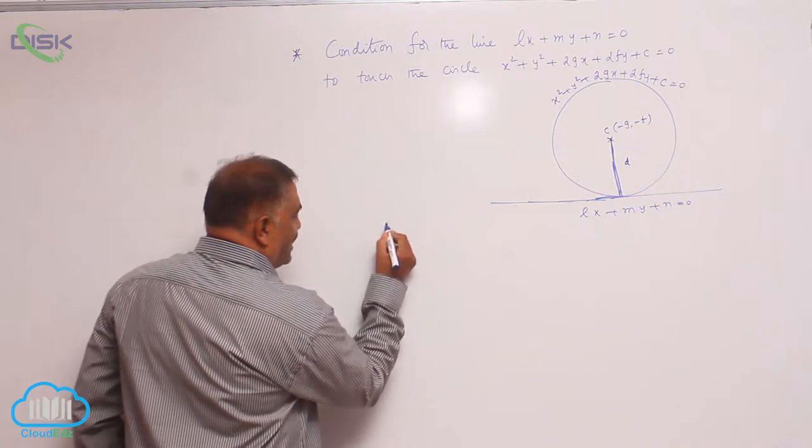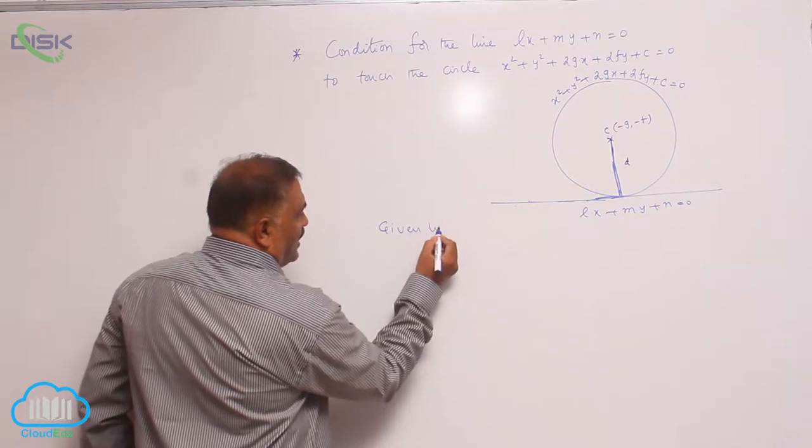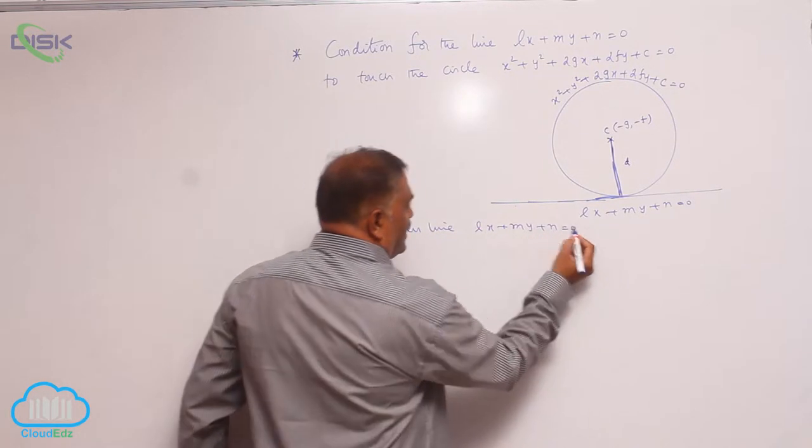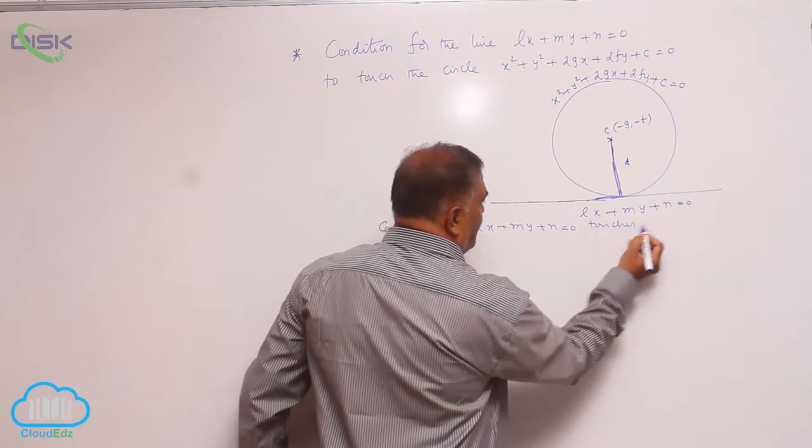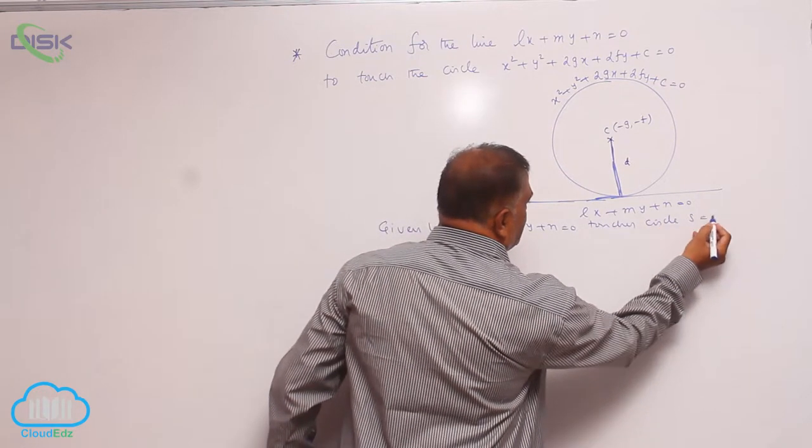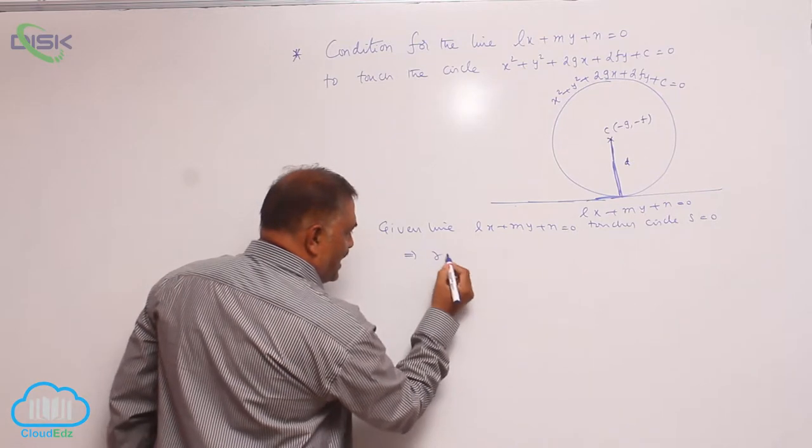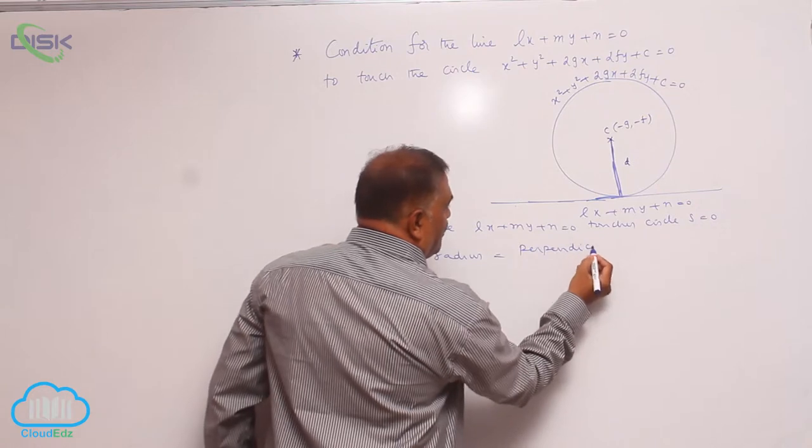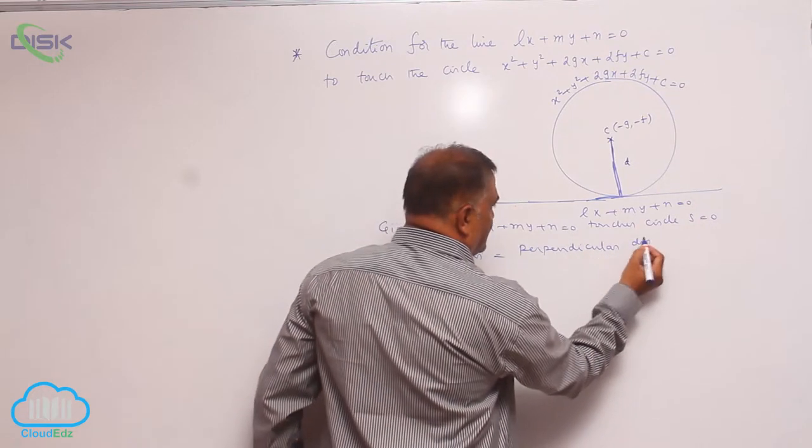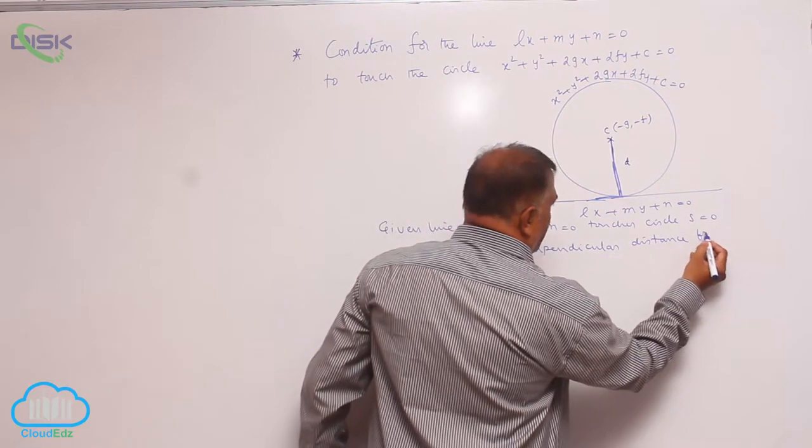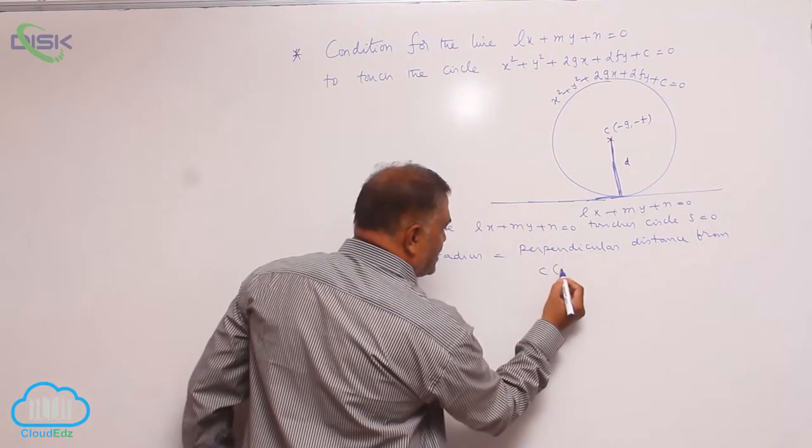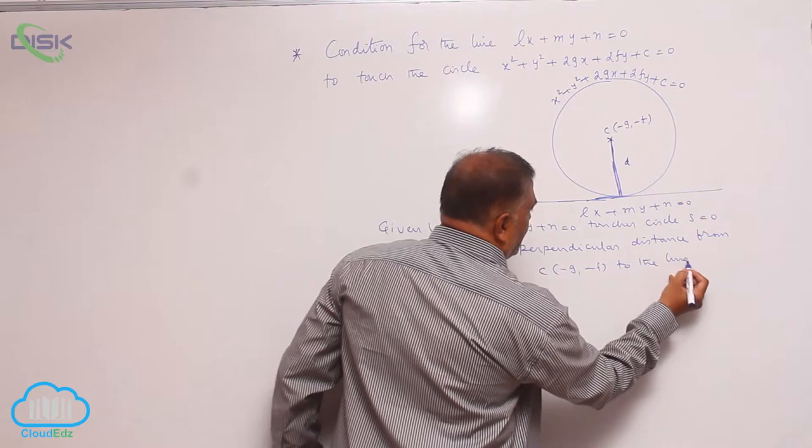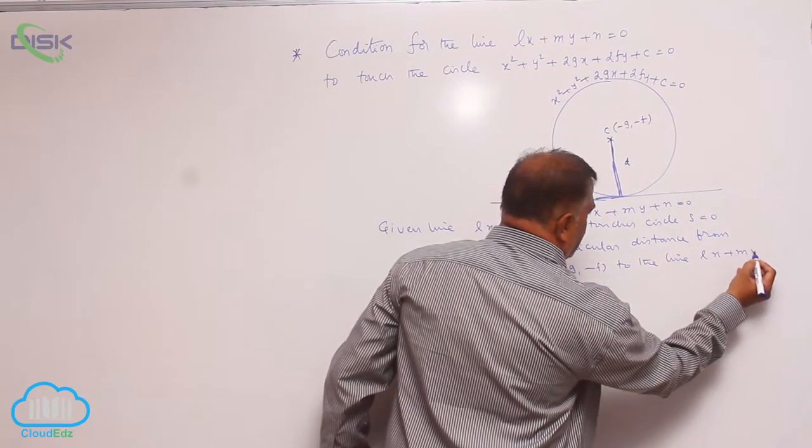So, given line L x plus m y plus n equal to 0 touches circle equation s equal to 0 implies radius is equal to perpendicular distance from center minus g comma minus f to the line L x plus m y plus n equal to 0.